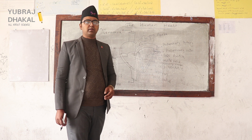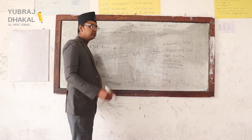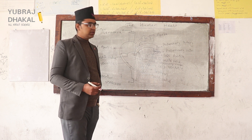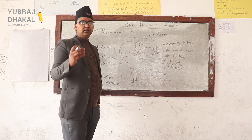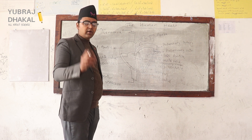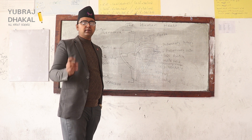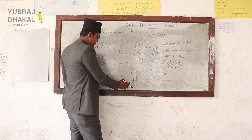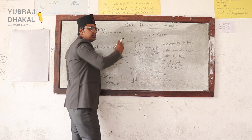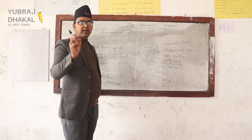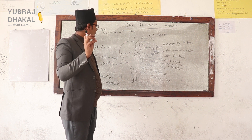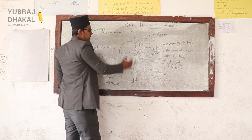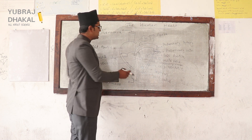Let's start from deoxygenated blood. Deoxygenated blood is carried by the veins, and from the veins, to the right side through the superior vena cava and inferior vena cava. Through these two veins, deoxygenated blood is carried from different parts of the body to the right auricle.